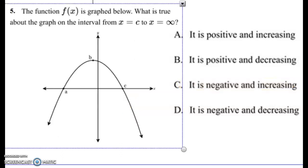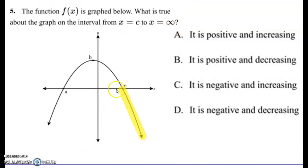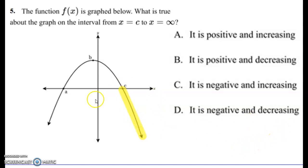Last example of this type: x equals C to x equals positive infinity. From C to positive infinity it's going down, but going to the right — and right is positive for x. So from C to positive infinity we're in the lower area, meaning it's negative, and it's going down, so it's negative and decreasing. The answer is D.